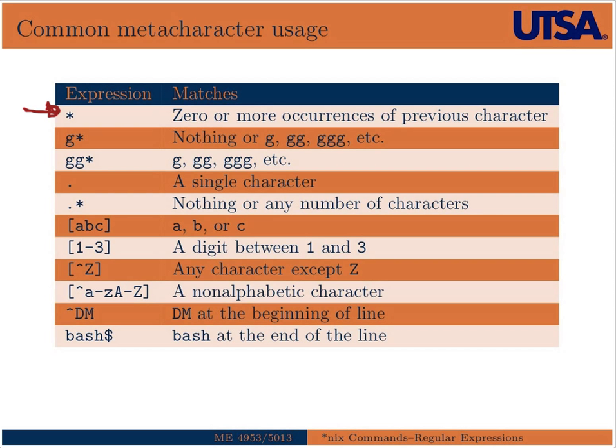For example, if we had G asterisk, that would match nothing, or G, or GG, or GGG, etc. So if we wanted to match one or more occurrences of the character G, we would use GG star, which would match G, GG, GGG, etc.